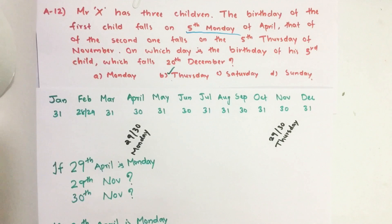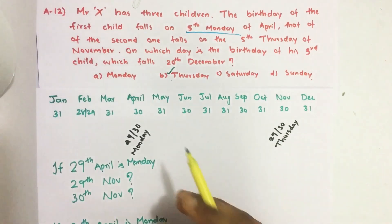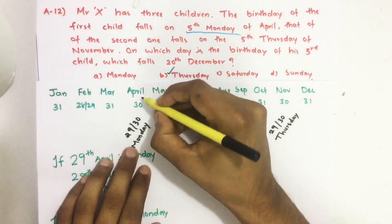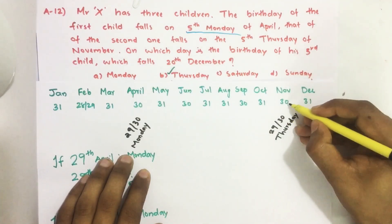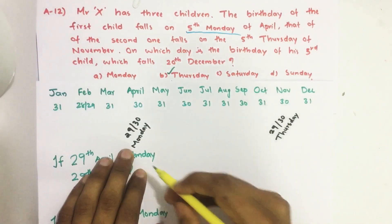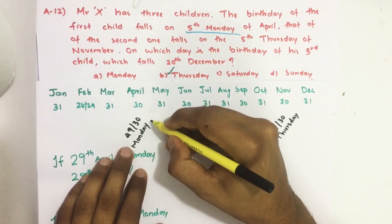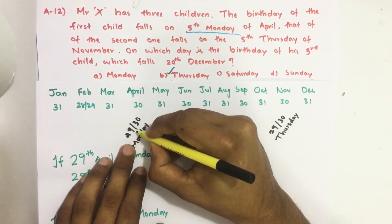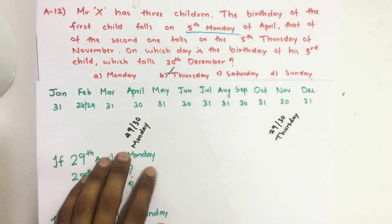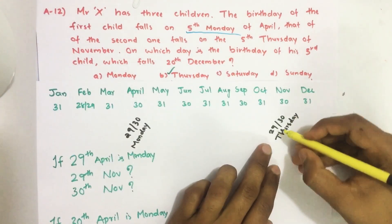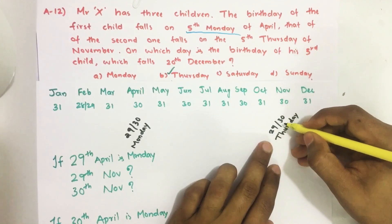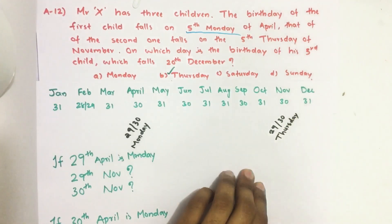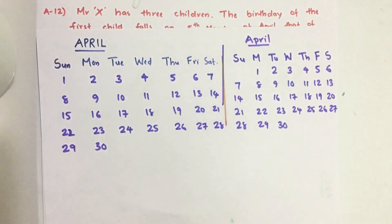To occur a day of the week 5 times in a month, there should be at least 29 days. But here in April we have 30 days and November also we have 30 days. That means the 5th Monday will be either on 29th or 30th April. Similarly, the 5th Thursday will be either on 29th November or 30th November. Let us see this from the calendar.